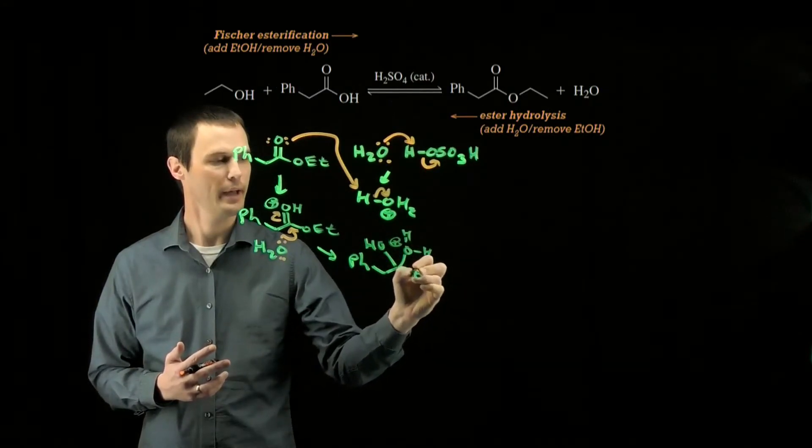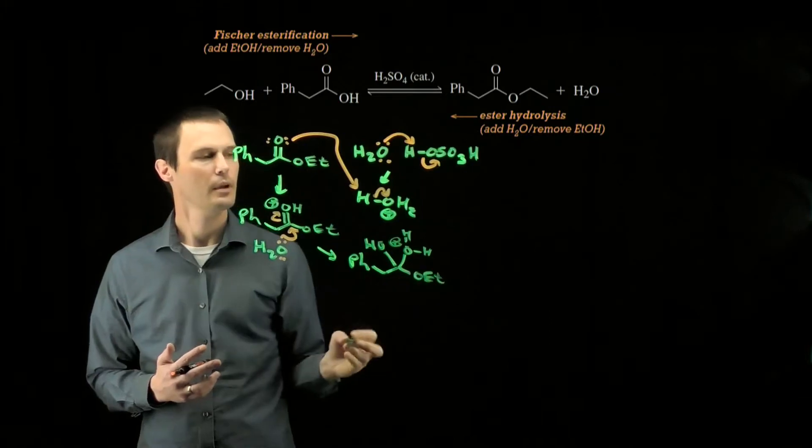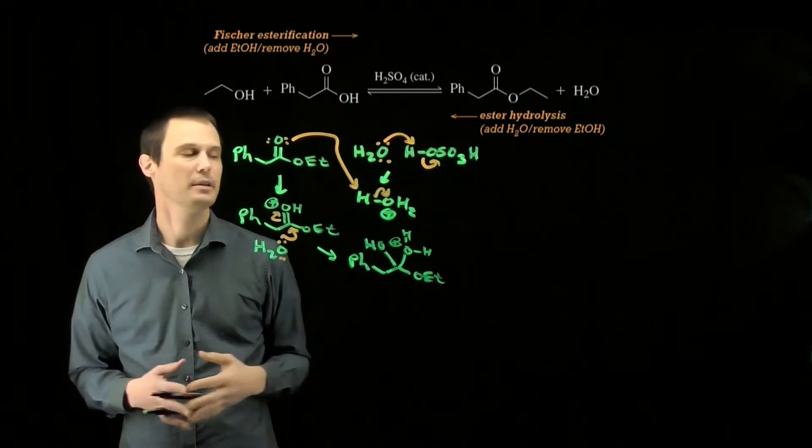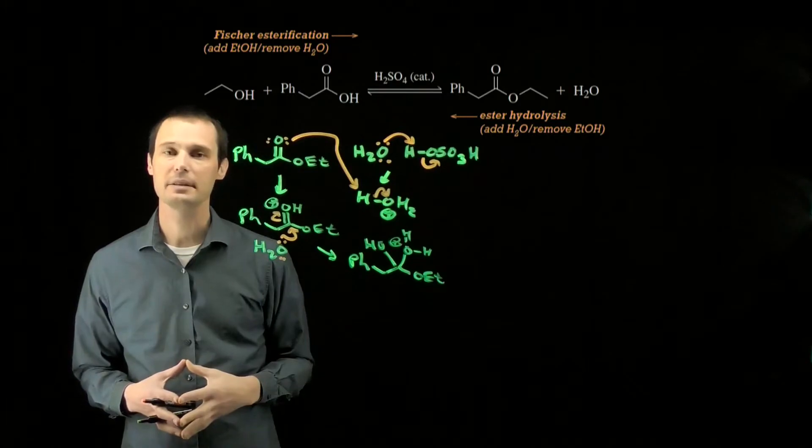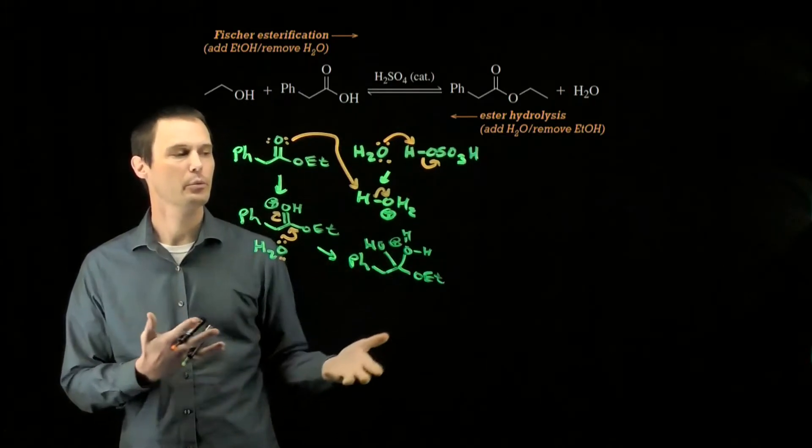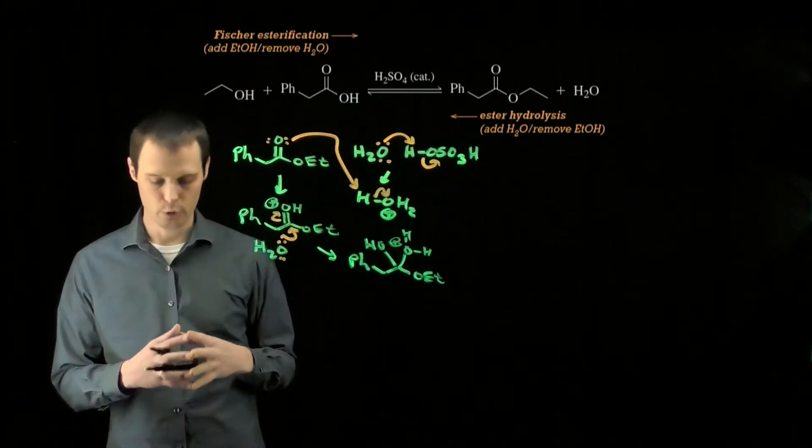The water has now added and has a positive charge. Right now, that water would be the best leaving group. We don't want it to be the best leaving group. We need the ethoxy group to be the best leaving group. So we need to shuffle the proton around in order to make the ethoxy group the best leaving group.